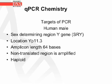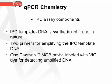For human male DNA, the targeting region is the sex-determining region of the Y gene, called SRY, located at YP11.3 — the Y chromosome, P arm (short arm), band 11, sub-band 3. The amplicon length is 64 bases, a non-translated haploid region. The IPC assay components are an IPC template, which is synthetic DNA not found in nature, two primers for the IPC template DNA, and one TaqMan MGB probe labeled with the VIC dye for detecting amplified DNA.